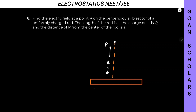Since the bisector is equally splitting the rod, this will be L/2 and L/2. So the total rod length is L, with L/2 on each side. Now let's imagine a small element — a small part of this rod. The length of the small part is dx, which we will integrate to get the whole rod later on.